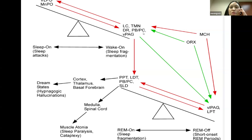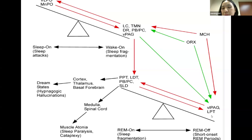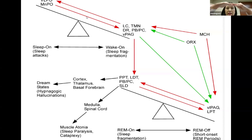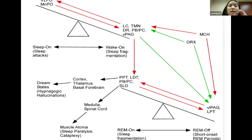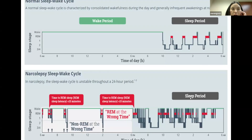When there's orexin, it stimulates the wake-on cells, so the patient is in a wakefulness state. The REM-off cells are activated and there is no REM because orexin is stimulating those REM-off cells. In people with narcolepsy, when there is no orexin to stabilize both seesaws, the system is always in limbo — they have sleep attacks, sleep fragmentation, arousals when they need to sleep, and sleep attacks when they need to be awake, with REM occurring every time they go to sleep whether daytime or nighttime.